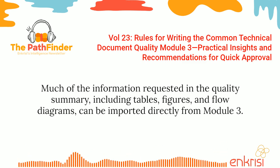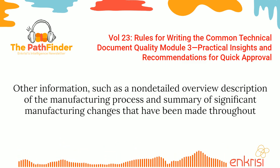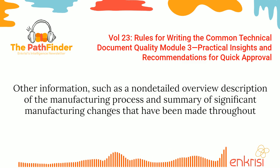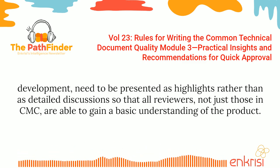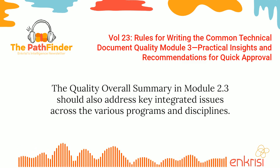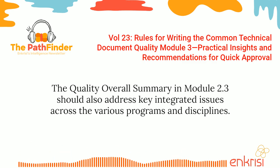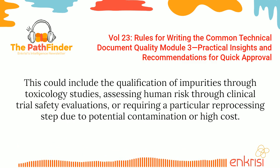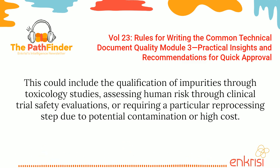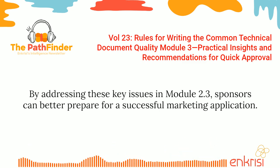Much of the information requested in the Quality Summary, including tables, figures, and flow diagrams, can be imported directly from Module 3. Other information, such as a non-detailed overview description of the manufacturing process and summary of significant manufacturing changes made throughout development, needs to be presented as highlights rather than detailed discussions so that all reviewers — not just those in CMC — are able to gain a basic understanding of the product. The Quality Overall Summary in Module 2.3 should also address key integrated issues, such as the qualification of impurities through toxicology studies, assessing human risk through clinical trial safety evaluations, or requiring a particular reprocessing step due to potential contamination or high costs. By addressing these key issues in Module 2.3, sponsors can better prepare for a successful marketing application.